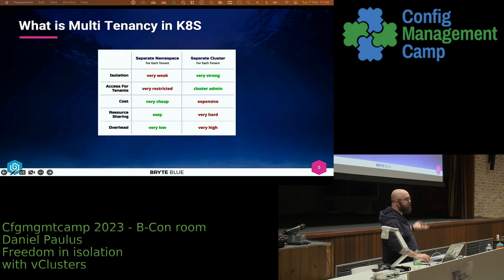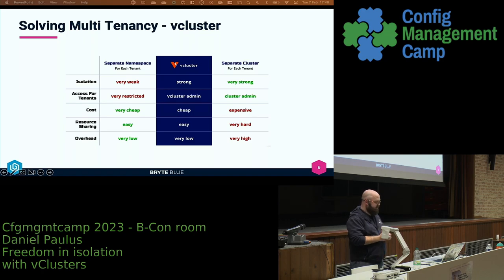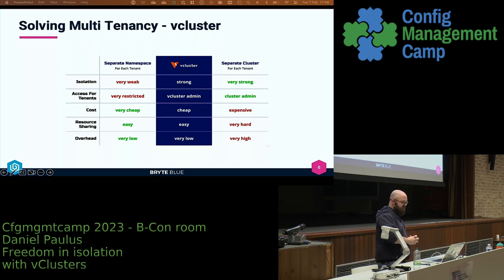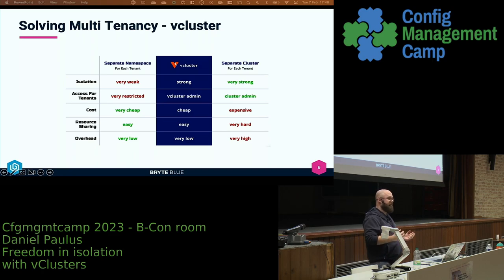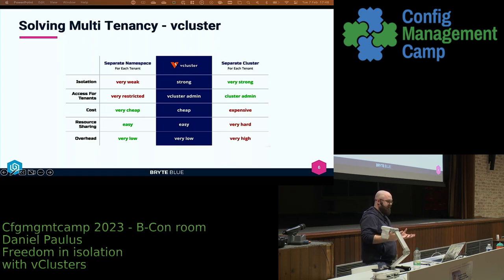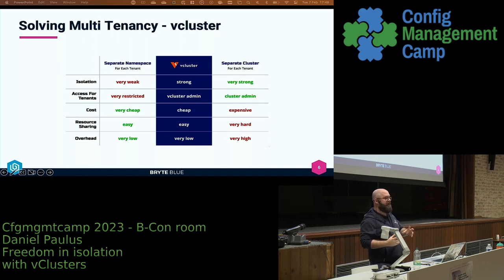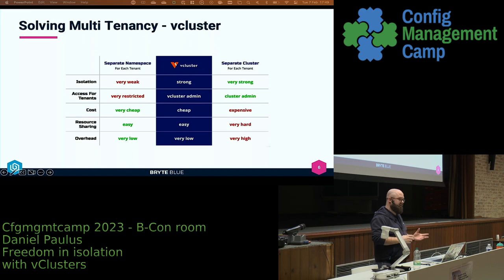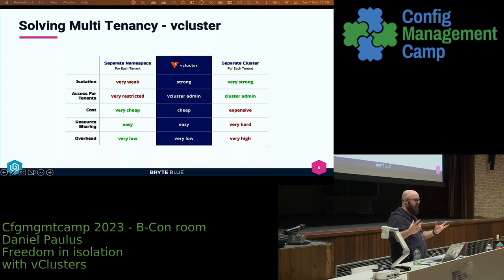When we started to look at how we could solve this issue, we found vcluster. Vcluster solves a few of our problems. One of them is isolation — what vcluster does is it runs a separate control plane within a namespace for the team to access, so the team gets a totally isolated view of that namespace and can use it as if it were a Kubernetes cluster. Same thing for access: you're an admin in your own vcluster, which most people like. For the host cluster, you only need access within that single namespace to work with vcluster, so no broad access permissions are needed.